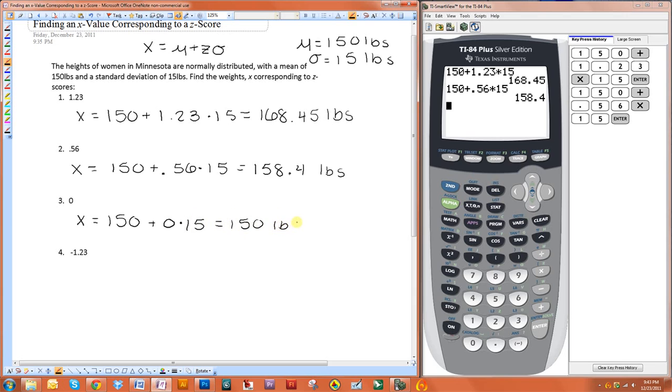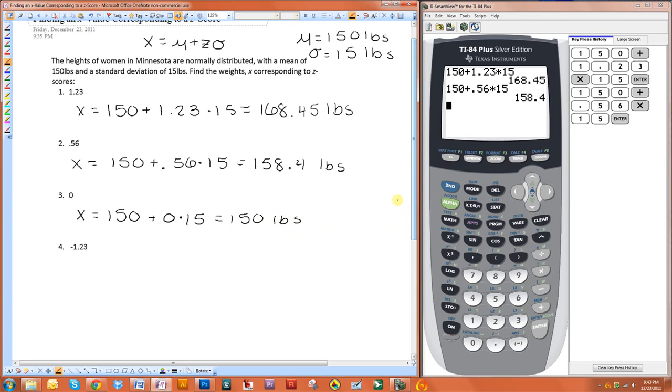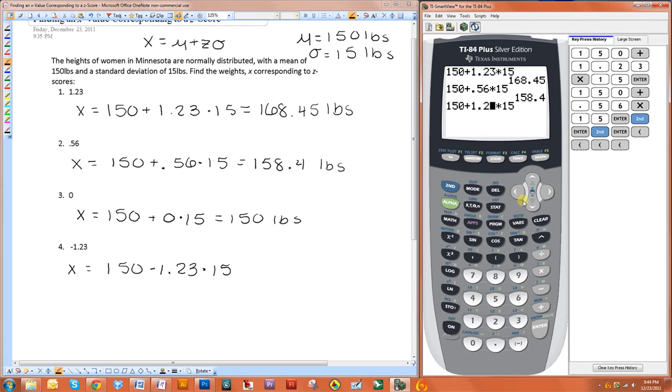You might not have even had to plug it into the formula. Lastly, x equals 150 minus 1.23 times 15. I'm going to pull up the calculation I did earlier in my calculator and just change that to a minus. And there you go.